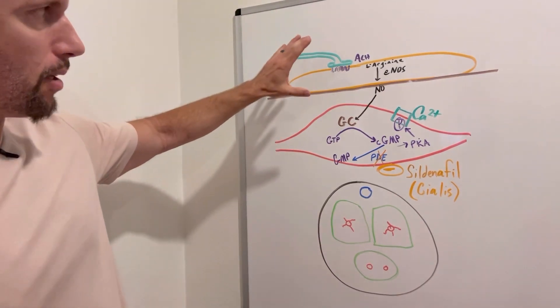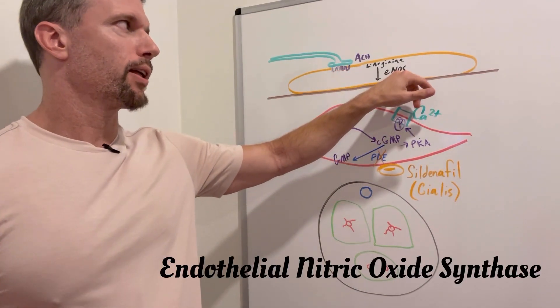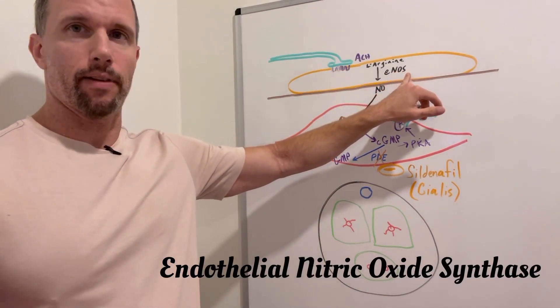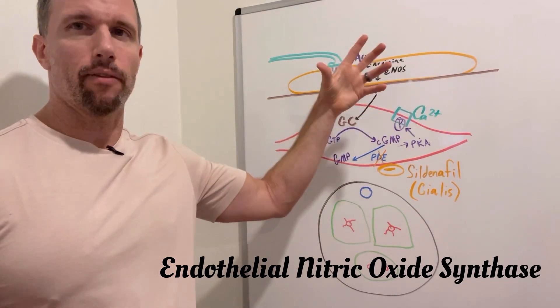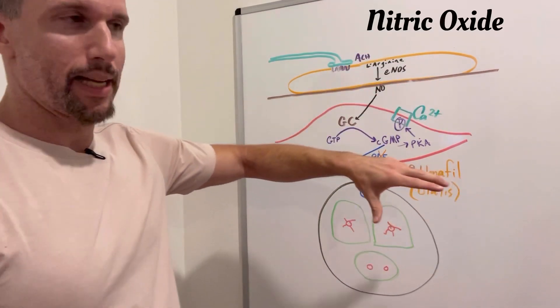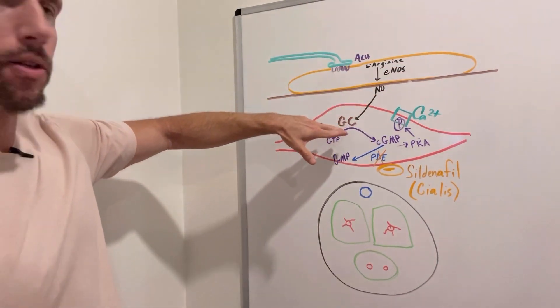So this is leading to the point. We have endothelial nitric oxide synthase that gets activated. It takes L-arginine, an amino acid, and converts it into nitric oxide, which is a gas that in a paracrine fashion moves its way into the smooth muscle cells.